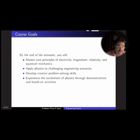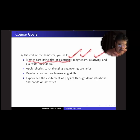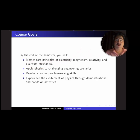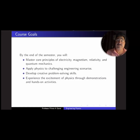So what are the goals of our course? By the end of the semester, you will master the core principles of electricity, magnetism, relativity, and quantum mechanics — the core physics we will cover. All these machines rely on the principles we learn through these subjects. We will then apply physics to challenging engineering scenarios, and you'll be given projects and assignments where you understand these ideas and apply them to some engineering scenarios.